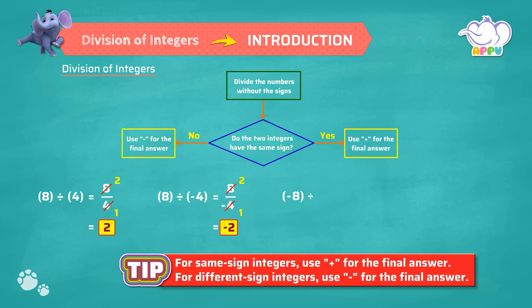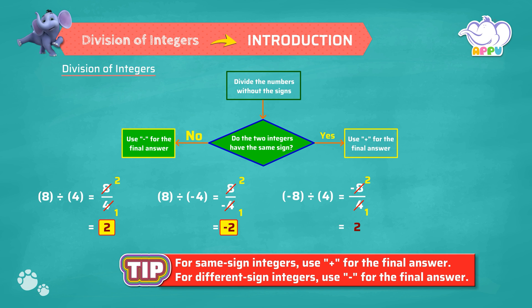Minus 8 divided by 4. We first divide 8 by 4, which equals 2. We have to place the sign for this quotient. Here minus 8 is a negative integer and 4 is a positive integer. So the answer is minus 2.